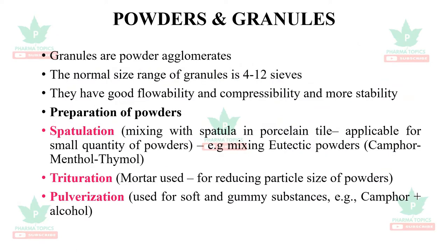Special use powders are eutectic mixtures, effervescent granules, and powders to be reconstituted. Granules are powder agglomerates. The normal size of granules is 4 to 12 sieves. They have good flowability and compressibility, and more stability when compared to powders.